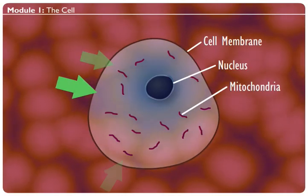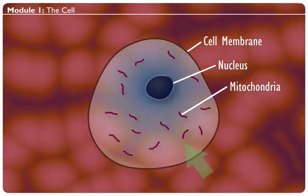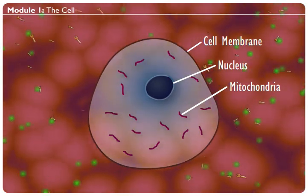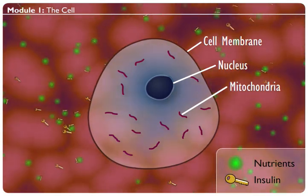In order for your cells to be fed, you need nutrients to easily pass through the membrane. When you eat, your body produces insulin to travel along with the nutrients in your bloodstream.